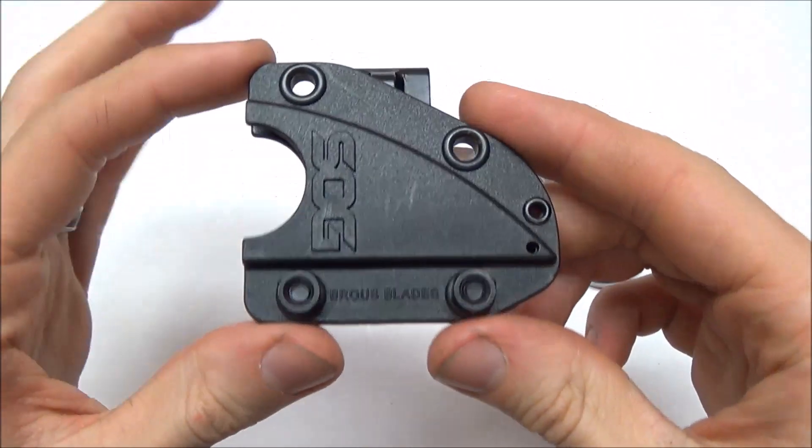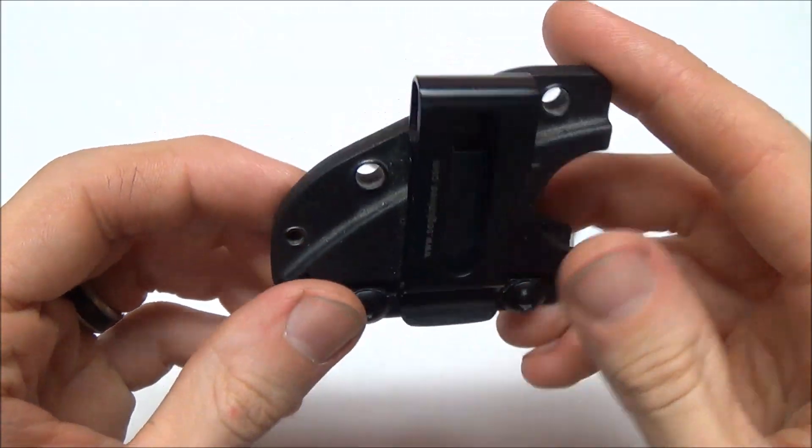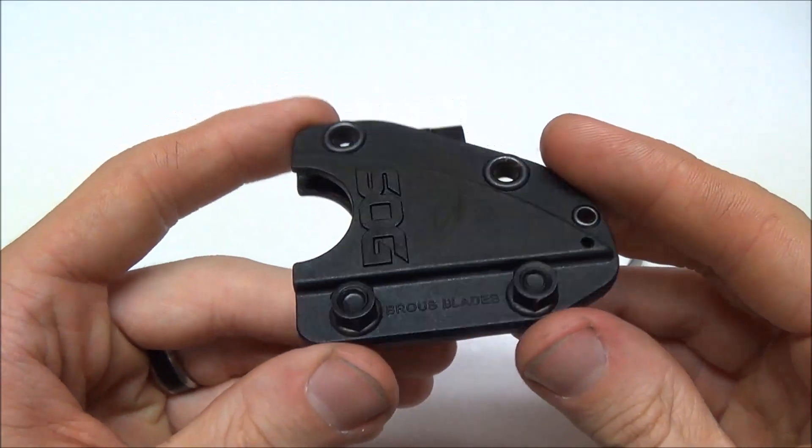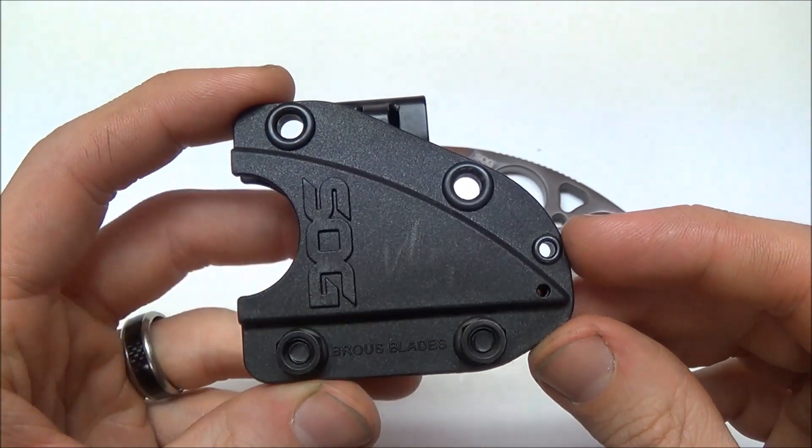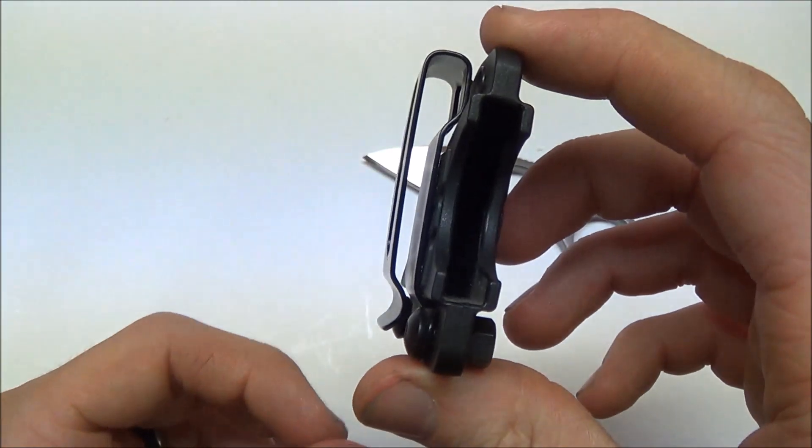I'll show you guys the sheath that it comes with. It is just an injection molded nylon sheath, not Kydex. But it's not a bad sheath. It is a good sheath for what it is. And it's very lightweight, pretty minimalistic. It is a little bit smaller than Jason's sheath that comes with his Silent Soldier, I believe. So that's pretty cool. A little improvement over the custom.